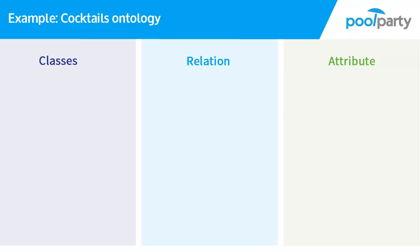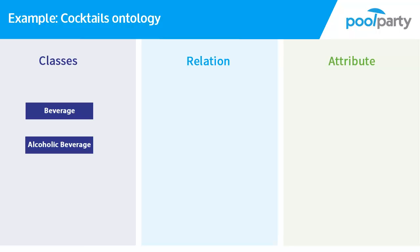Let's take a look at an example. We could say that we have an ontology we want to use to describe cocktails and everything we need to make cocktails. You could define a class called alcoholic beverage, and for that class define certain attributes and relations. You could also define a class called beverage. An alcoholic beverage is a special kind of beverage, meaning every alcoholic beverage is also a beverage. In an ontology, we would model that by saying that alcoholic beverage is a subclass of beverage. In order to be a member of the class alcoholic beverage, a concept also has to be a member of the class beverage.